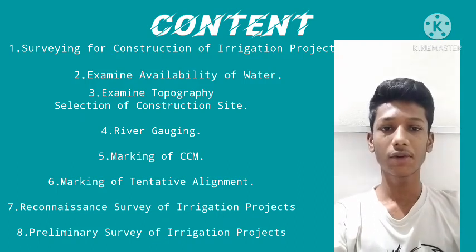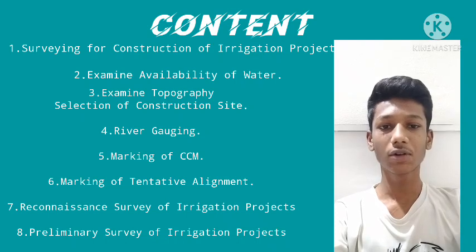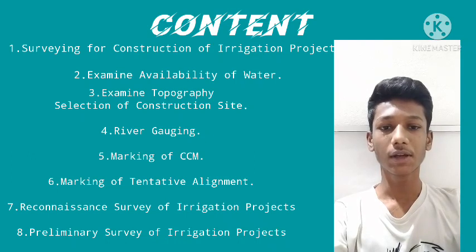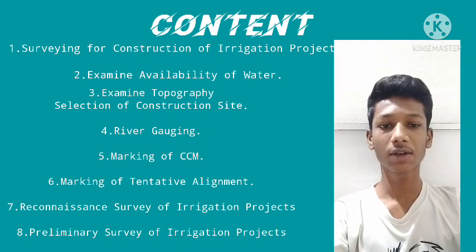Surveying for construction of an irrigation project involves the following steps: examine availability of water, examine topography, selection of construction site, river gauging, marking of CCM, marking of tentative alignment, reconnaissance survey of irrigation project, preliminary survey of irrigation project, and final location survey with a final survey report.